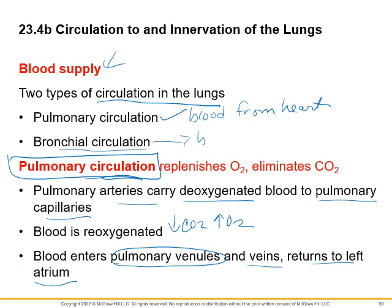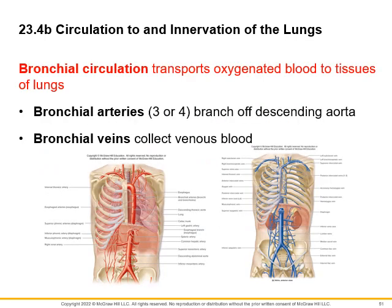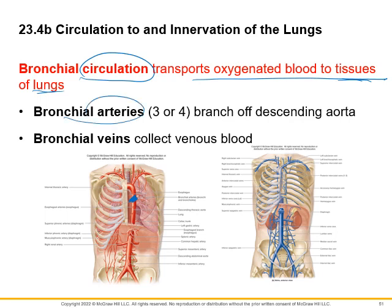The bronchial circulation is the blood coming off the aorta that actually feeds the lung tissue — similar to how coronary arteries feed the cardiac muscle. Bronchial circulation transports oxygenated blood to the tissues. There are three or four bronchial arteries coming off the descending or thoracic aorta, and then bronchial veins drain from the bronchial tissues.